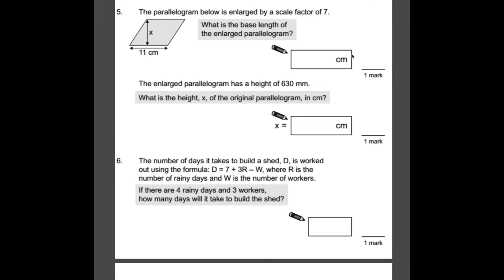Number five, the parallelogram below is enlarged by a scale factor of 7. What is its new base length? Well, based on this one here it's 11. So if it's got 7 times bigger our answer would be 77. For the second part it's asking you to do the inverse. So the enlarged parallelogram has a height of 630. What is the height of x on the original parallelogram? So we times that by 7. What we need to do is divide this new number by 7 to get the original value. So 630 divided by 7 is 90.